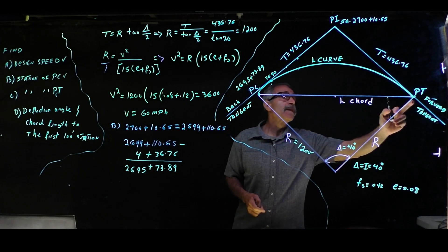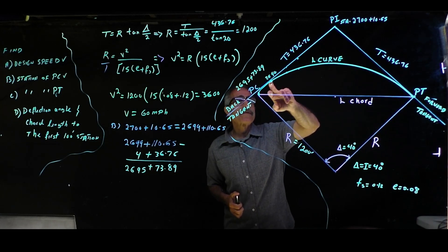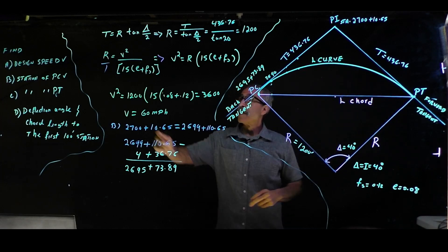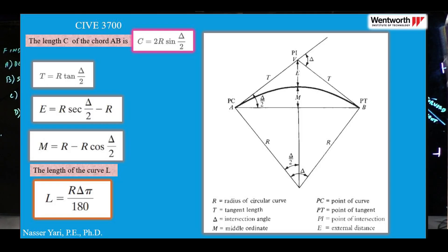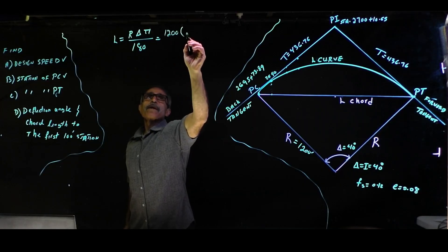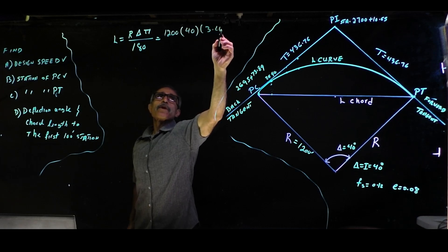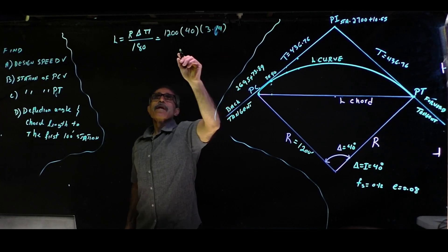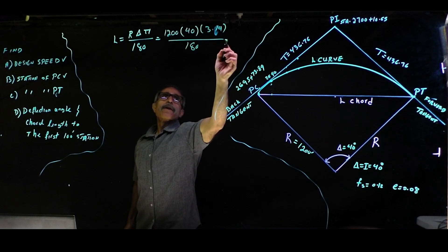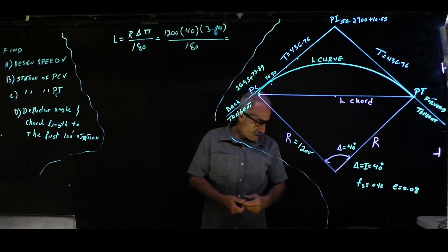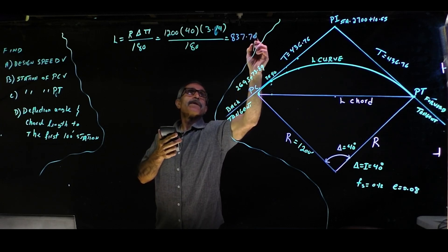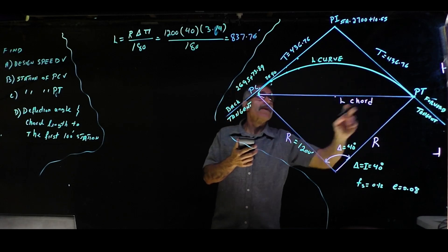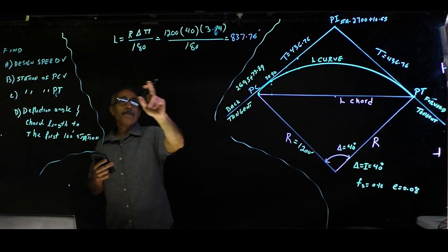To find the PT station, we first need the length of the curve. The curve length formula is: L equals radius times delta times pi divided by 180. With radius of 1200 feet and delta of 40 degrees, that gives us a curve length of 837.76 feet.